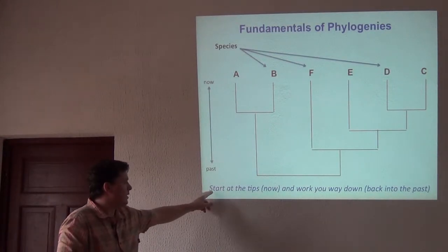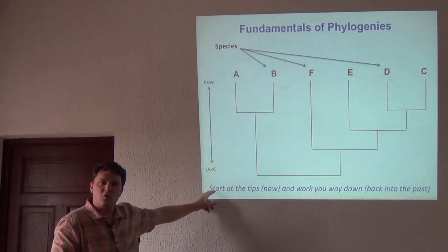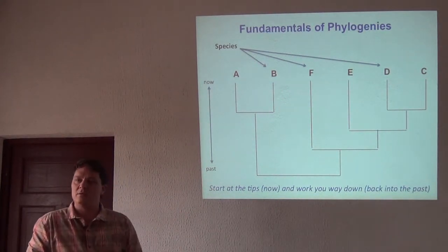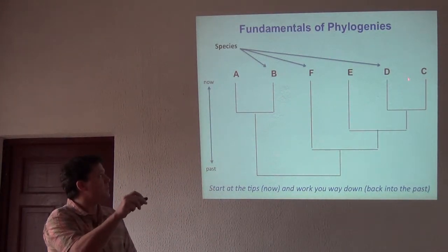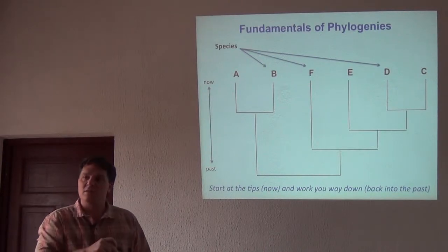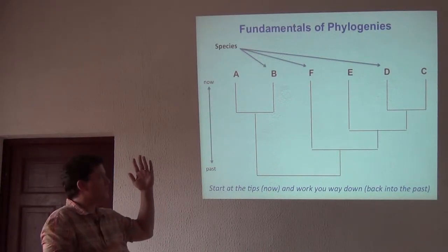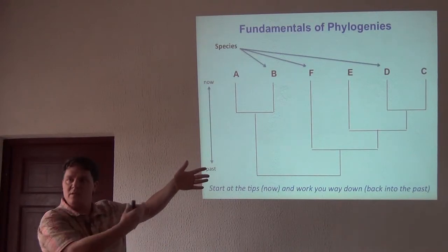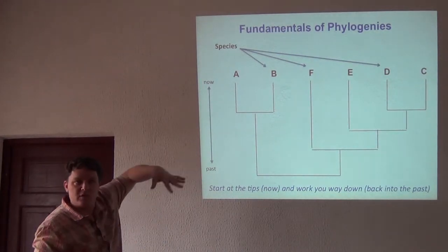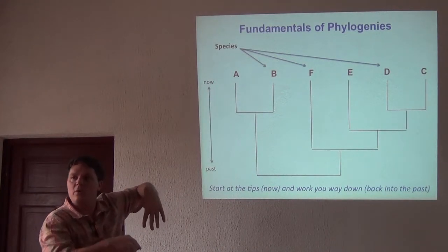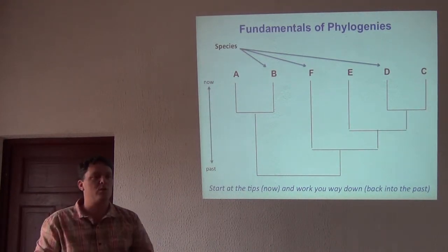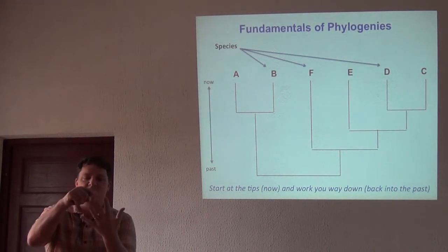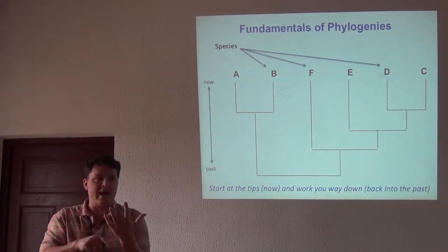This is really how you can't go wrong — just start with this very simple principle: start at the tips and work your way back. Start at the top and work your way back down into the tree. If the tree is tilted, start at the tips on the right and work your way left. If it's upside down, start at the tips at the bottom and work your way up. It doesn't matter which direction the tree is facing — start at the tips and work your way down to the base.